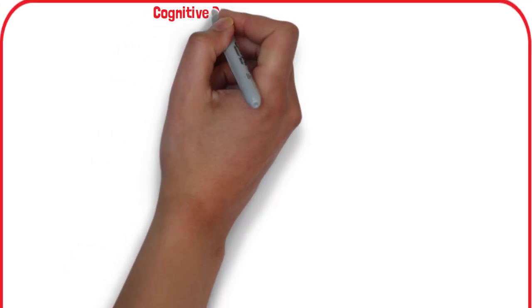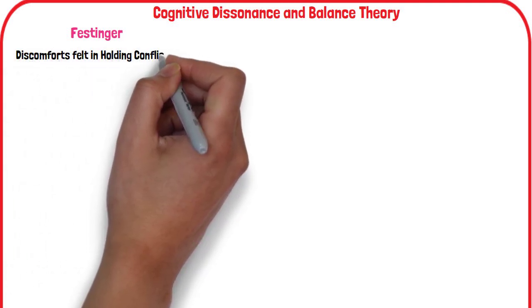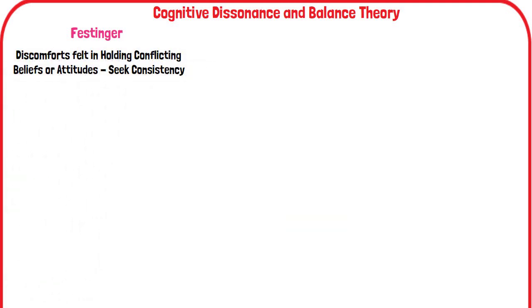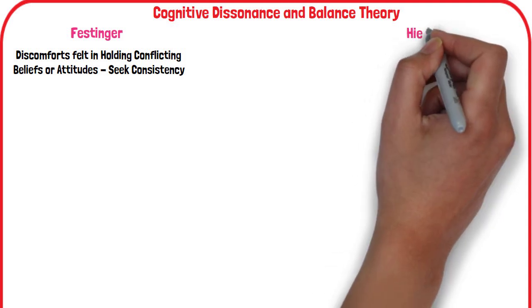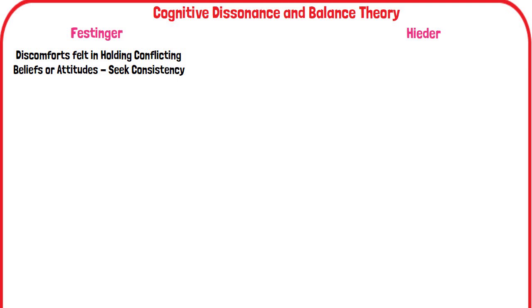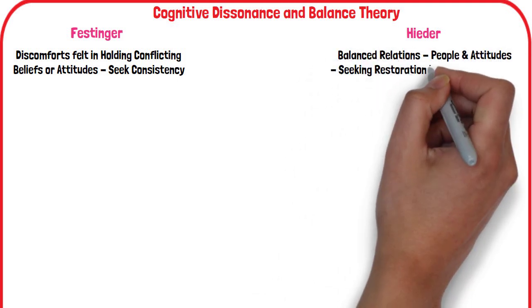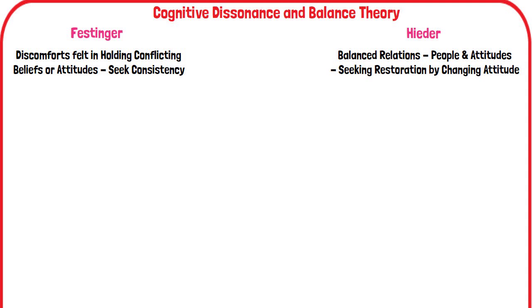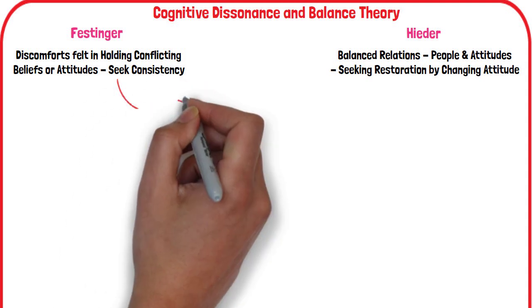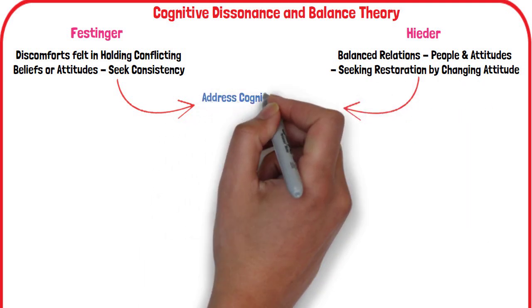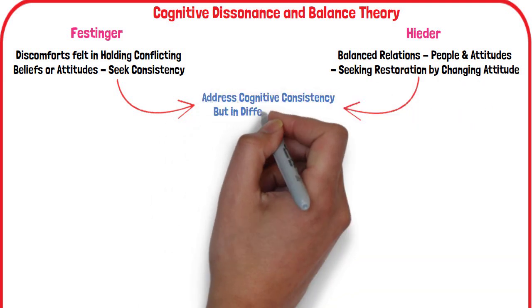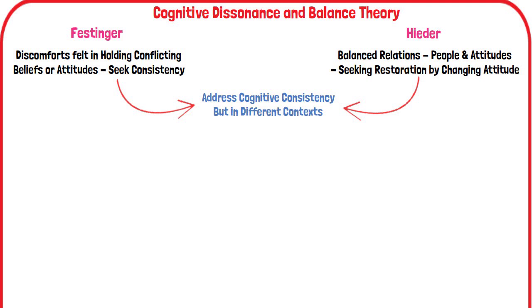Cognitive Dissonance Theory, proposed by Festinger, focuses on the discomfort felt when holding conflicting beliefs or attitudes, leading individuals to seek consistency. Heider's Balance Theory, on the other hand, emphasizes the desire for balanced relations among triads of entities like people and attitudes, with imbalances prompting changes in attitudes to restore balance. Both theories address cognitive consistency, but in different contexts.